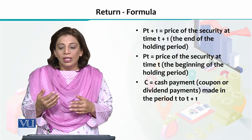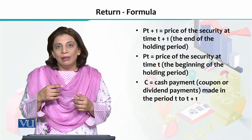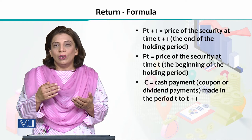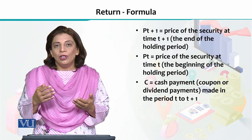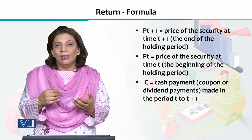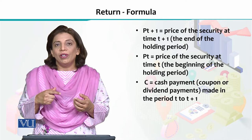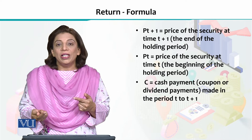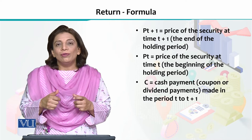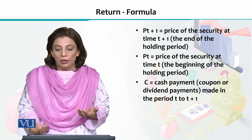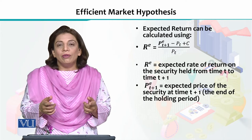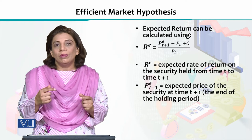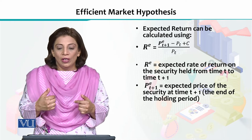P T plus 1 is the price of the security at time T plus 1, and P T is the price of the security at the prior reference time period, which we consider as the base period. C stands for the cash payment — it can be dividends or any other cash payment that an investor can receive from time period T to T plus 1.